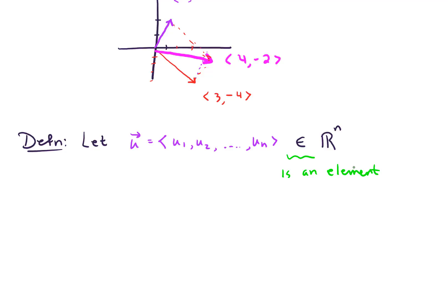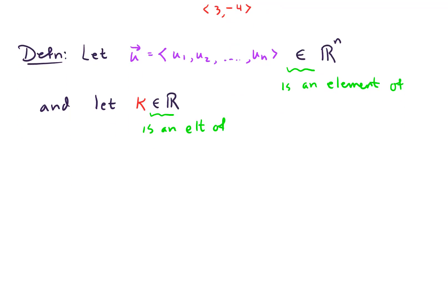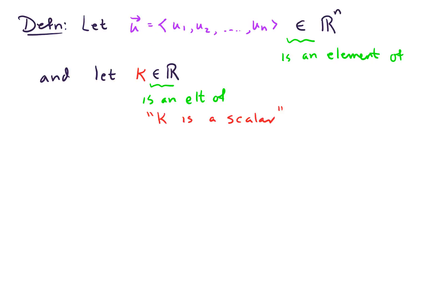And this element of notation is just shorthand for saying the vector u is an element of R^n. So we've got a vector that lives in R^n. And now let k be a real number. So we'll let k be an element of the real numbers. And by this notation here, we mean k is an element of the real numbers. So k is what we call a scalar.